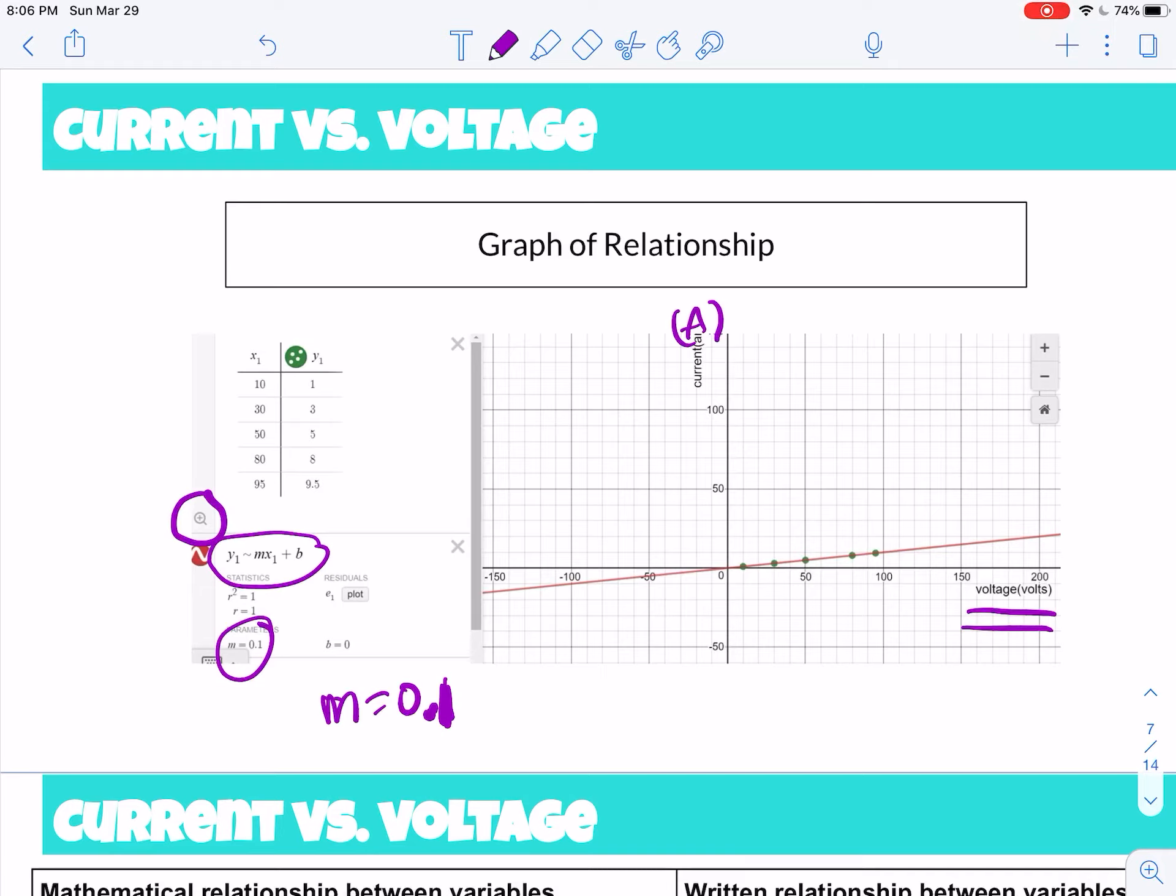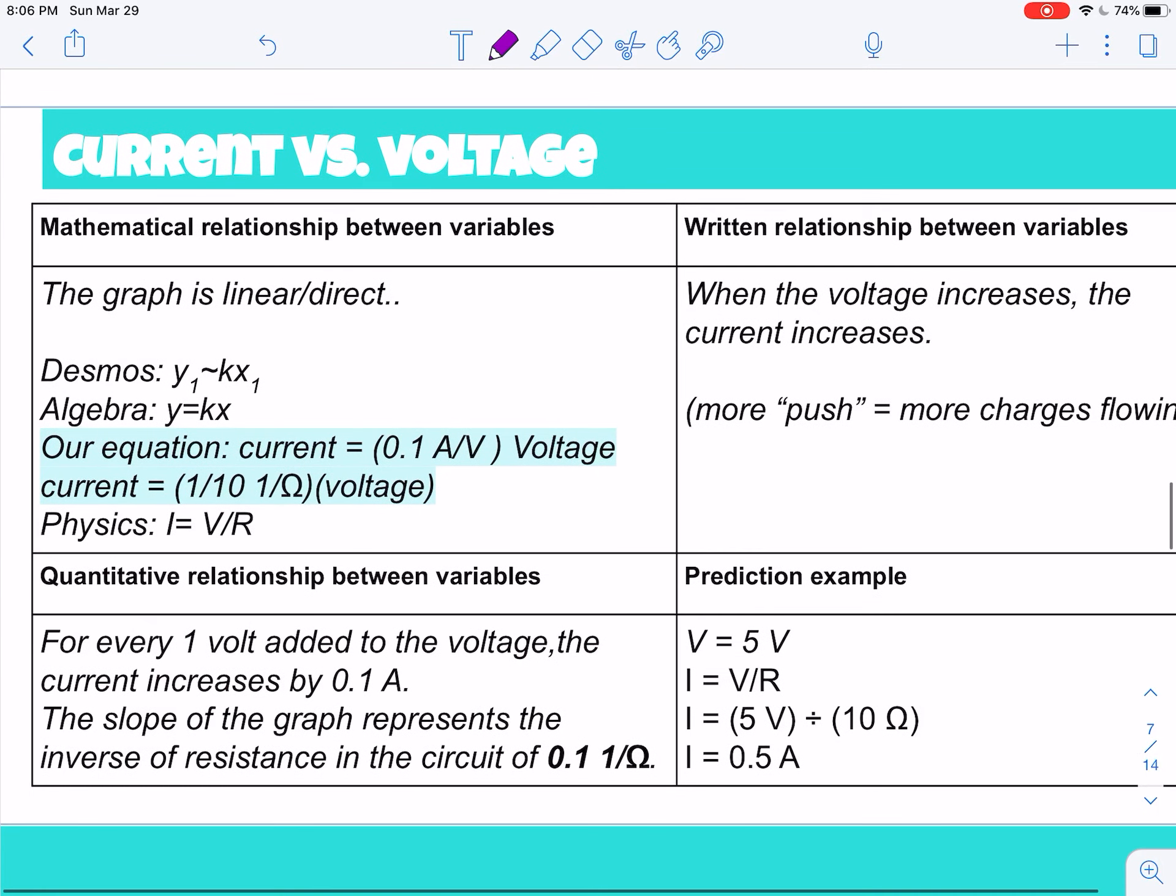Make sure you have units and labels, and make sure you have a trend line, okay? Which should be either linear, Y equals MX plus B, or if you want to use Y is proportional to KX1, right? That would be a direct relationship because it should go through zero, zero, okay? So just double-check everything on your graph before you turn it in, okay?